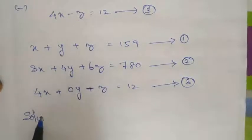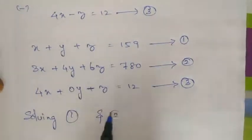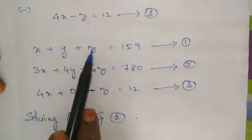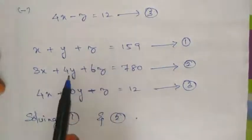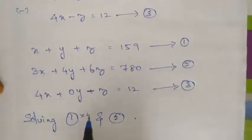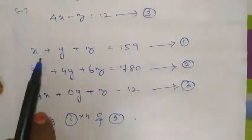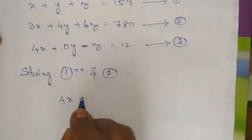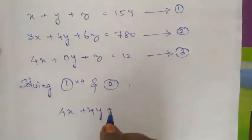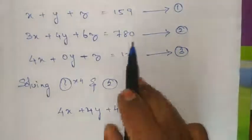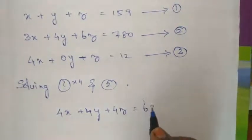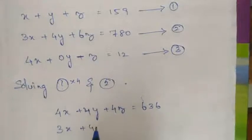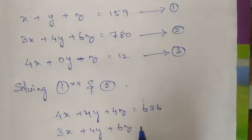Solving equations 1 and 2 by eliminating y. Multiply equation 1 by 4: 4x plus 4y plus 4z equals 636. The second equation is 3x plus 4y plus 6z equals 780. Subtracting to cancel the 4y terms gives us a simplified equation.